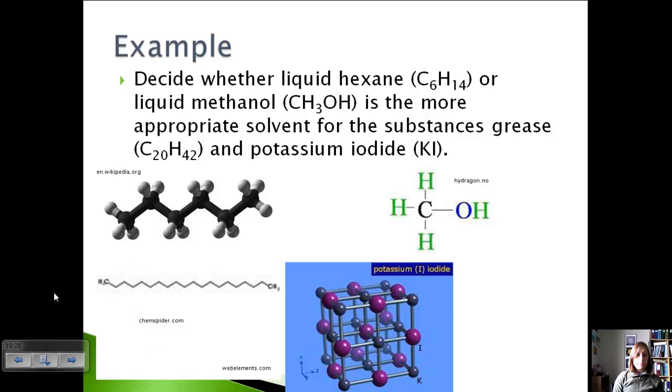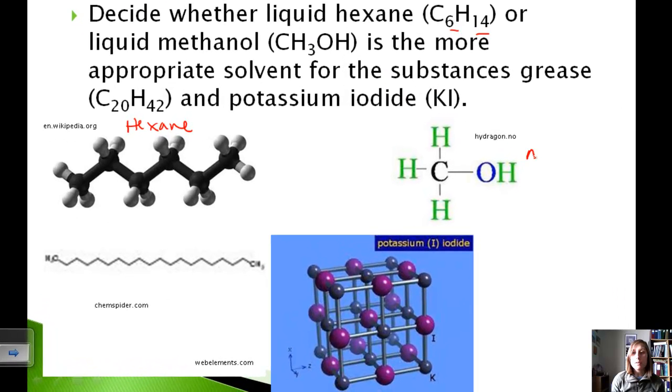All right, let's look at another example. So it says, decide whether liquid hexane, which is C6H14, and it's seen right here, so this is our hexane, or liquid methanol, which is CH3OH, so here's our methanol, is the more appropriate solvent for the substances grease and potassium iodide, so here's our potassium iodide.